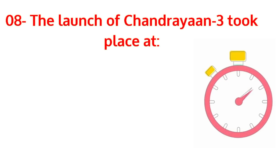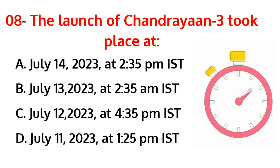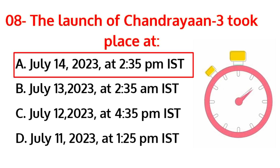The launch of Chandrayaan-3 took place at? The correct answer is option A, July 14, 2023, at 2:35 pm IST.